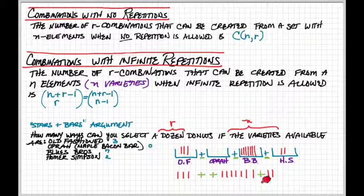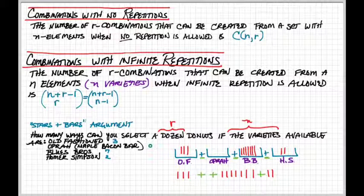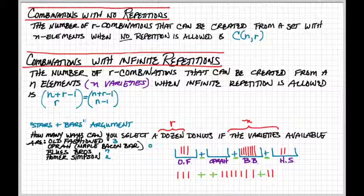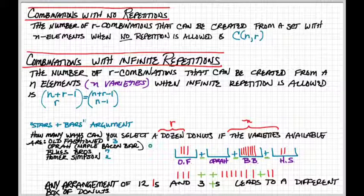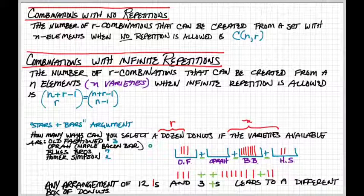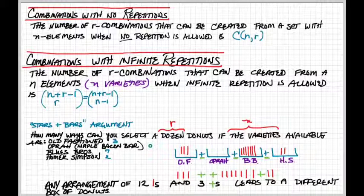Any selection can be represented in this type of encoding, where we're ordering N minus one pluses and R ones. So any arrangement of 12 ones and three pluses will lead to a different distribution of donuts in the boxes, and we already know how to compute those arrangements.